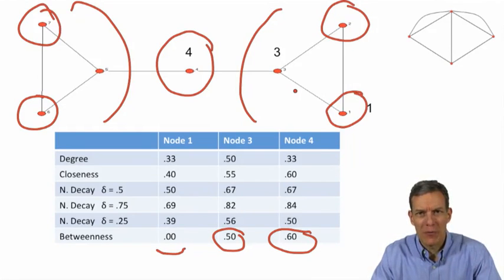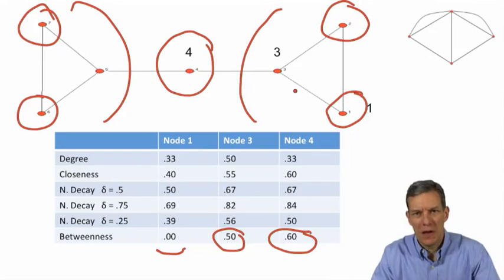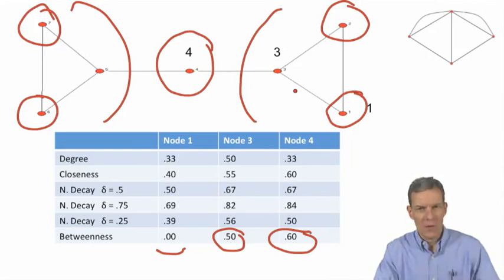The next topic we'll be looking at is eigenvector-based centrality measures — other kinds of measures that are going to capture importance of nodes and how well they're connected to other nodes.